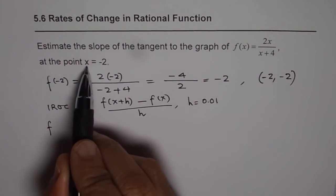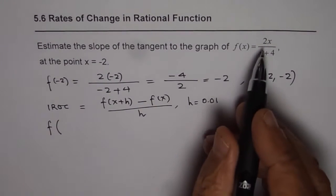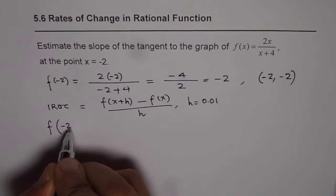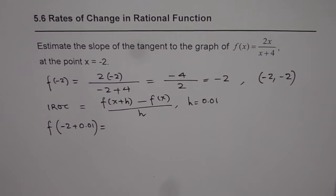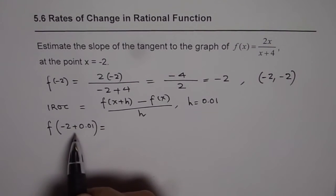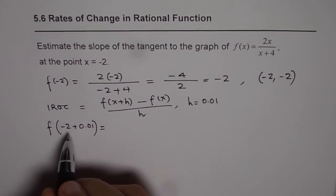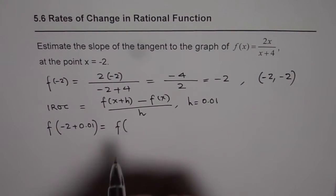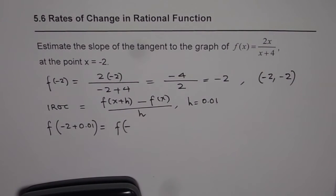That is to say, we will find the value of the function at x + 0.01. Now, x value is given to us as -2. So we will replace x with -2 + 0.01. We will use the calculator. So it is -2 + 0.01, which in decimals is -1.99.